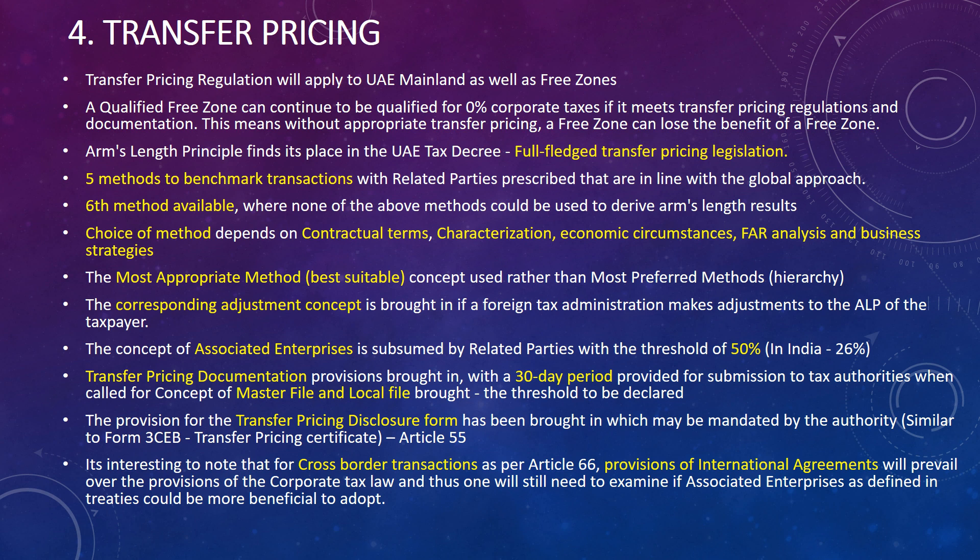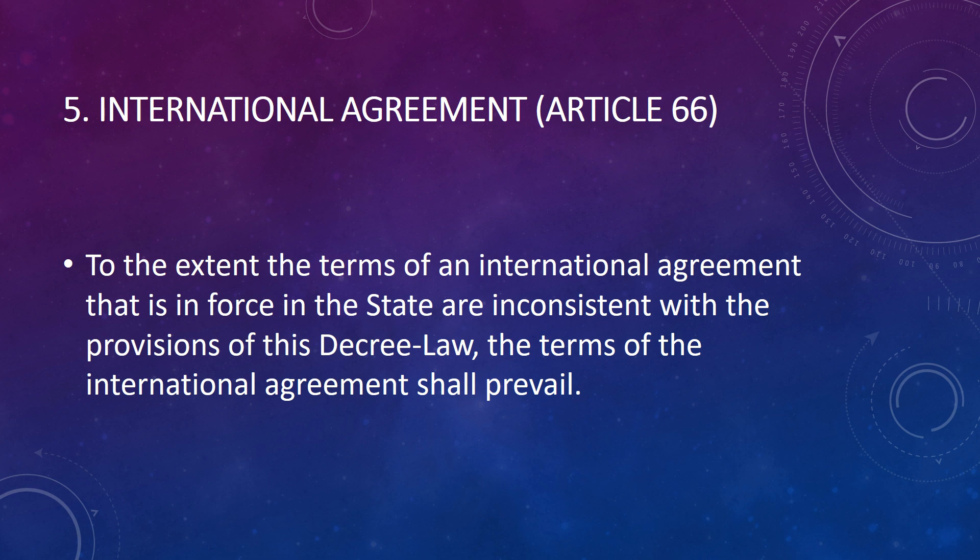Transfer pricing documentation must be provided within 30 days when called for by tax authorities. The concepts of master file and local file have been brought in: the group company must prepare a master file, while local branches and subsidiaries prepare local files. A threshold is expected to be declared for transfer pricing. A disclosure form provision for transfer pricing has been introduced — similar to India's Form 3CEB. Regarding cross-border transactions, as per Article 66, the provisions of international agreements will prevail. If a taxpayer gets more benefit under an international agreement, that will be used; otherwise, the corporate tax rules apply.